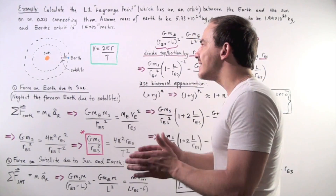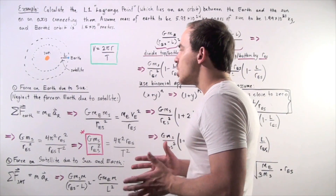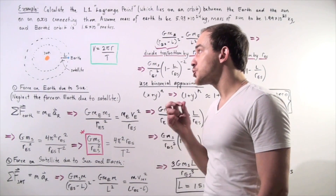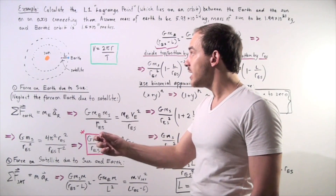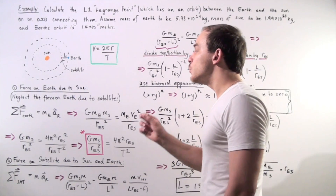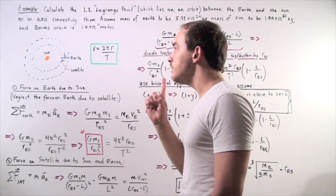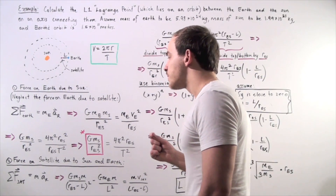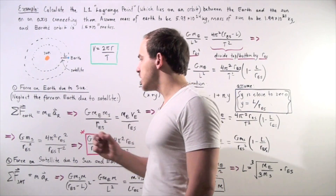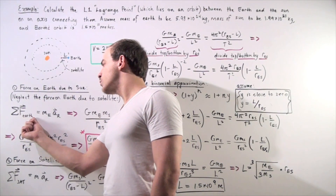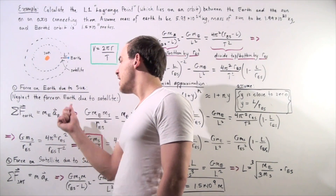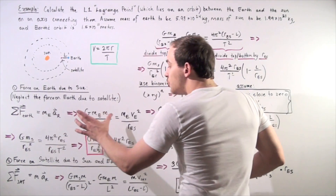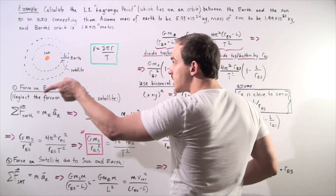So let's begin with step one: find all the forces acting on the Earth due to our objects. We have two objects, the satellite and the Sun. Because the satellite has a much smaller mass than the Sun, we can neglect the force on the Earth due to the satellite. We assume only one force is acting on the Earth — the gravitational force of the Sun — and we use Newton's second law of motion.